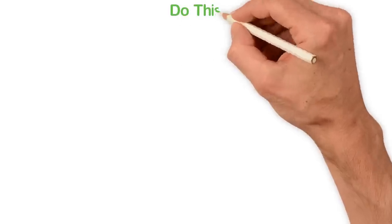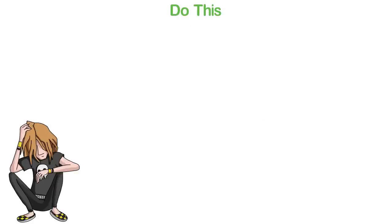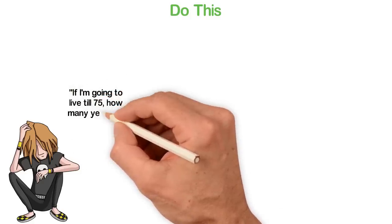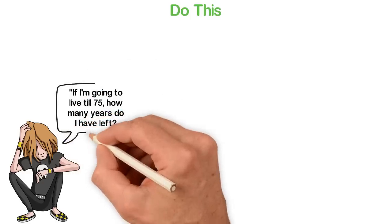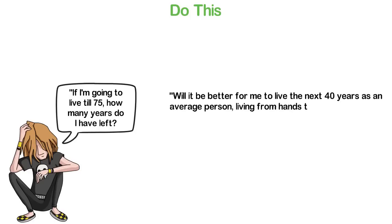Do this. I want you to do this simple exercise. Sit down and ask yourself, if I'm going to live till 75, how many years do I have left? Many people watching this video still have as much as 40 to 50 years to live. Now ask yourself, will it be better for me to live the next 40 years as an average person, living from hand to mouth, struggling with money and looking rich while I'm broke.